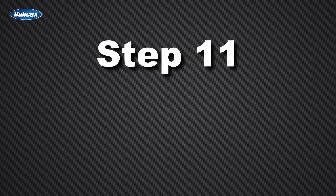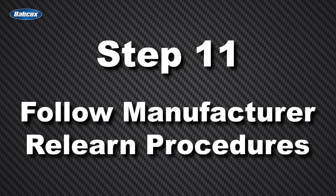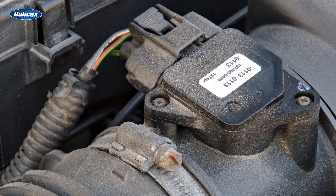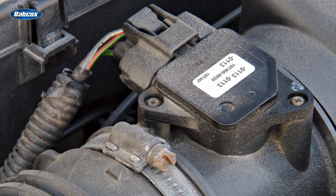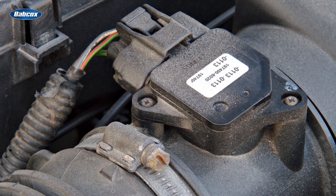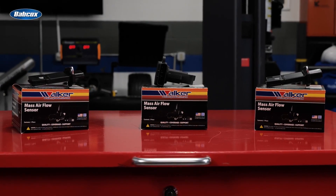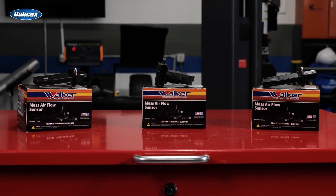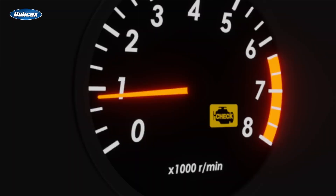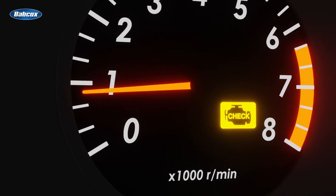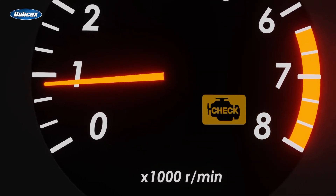Step eleven: follow manufacturer relearn procedures. If you determine that the MAF sensor is indeed the culprit and needs replacement, it's crucial to follow any manufacturer-specific relearn procedures after installing the new sensor. This process allows the ECM to properly recalibrate and learn the new MAF sensor parameters, ensure optimal performance, and prevent future issues. Skipping this step could lead to persistent check engine lights or drivability issues.